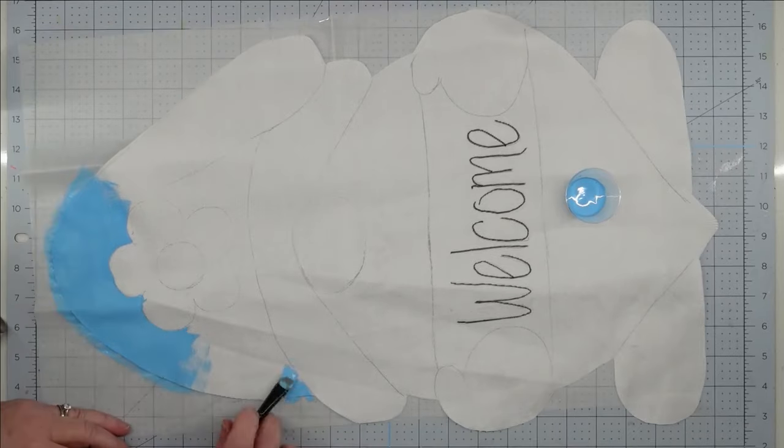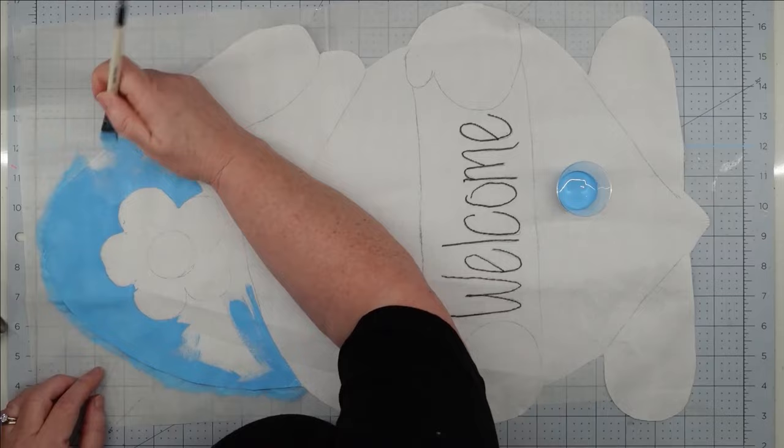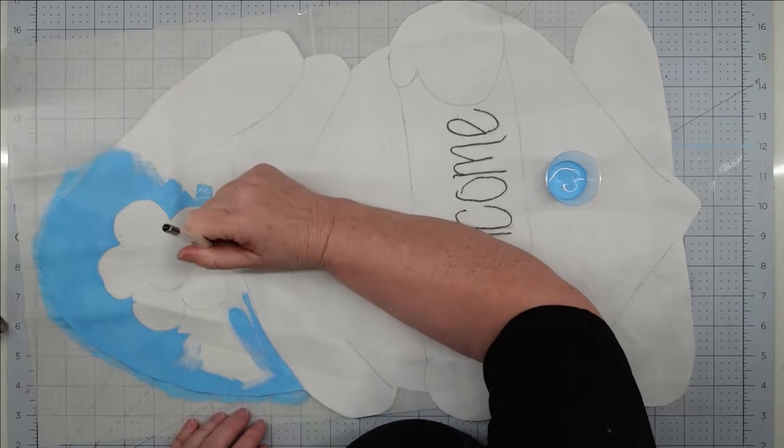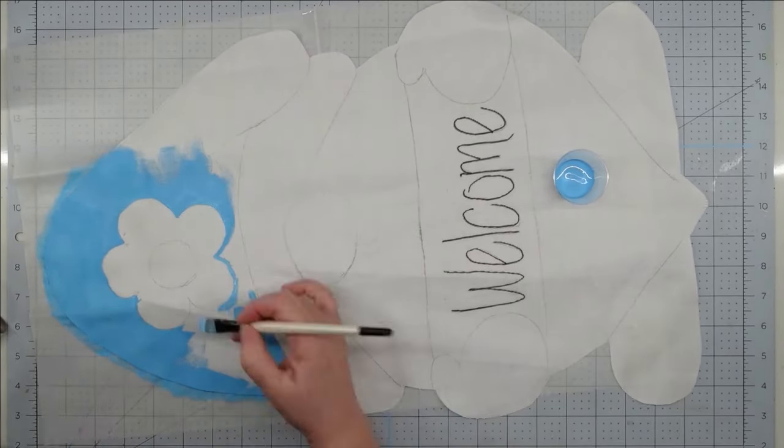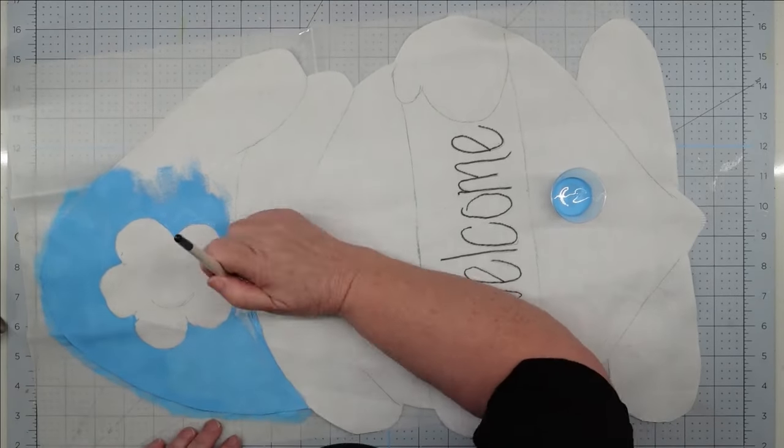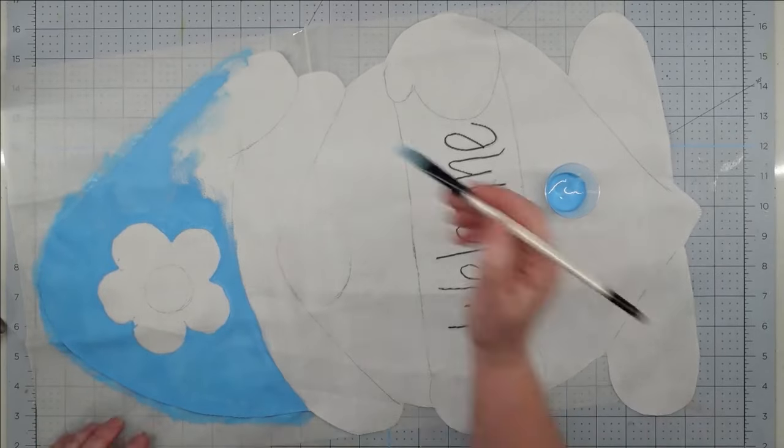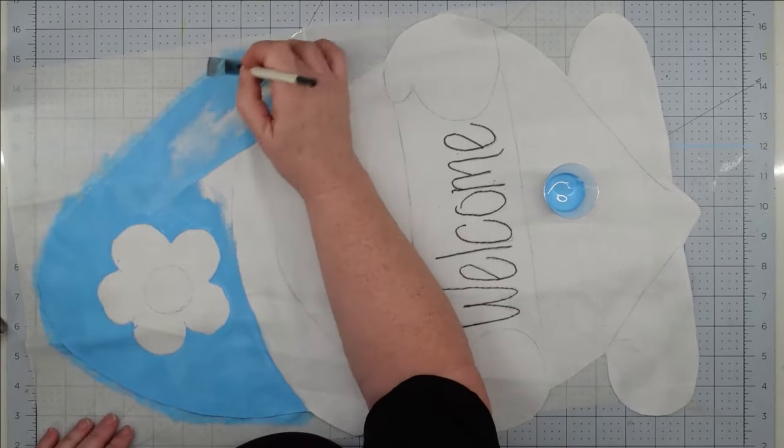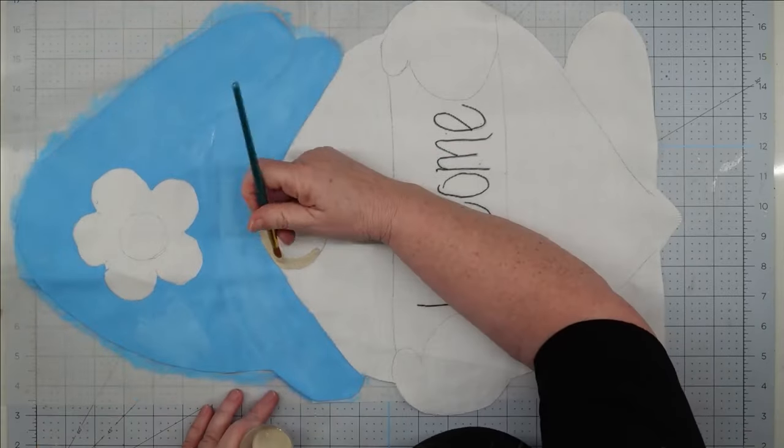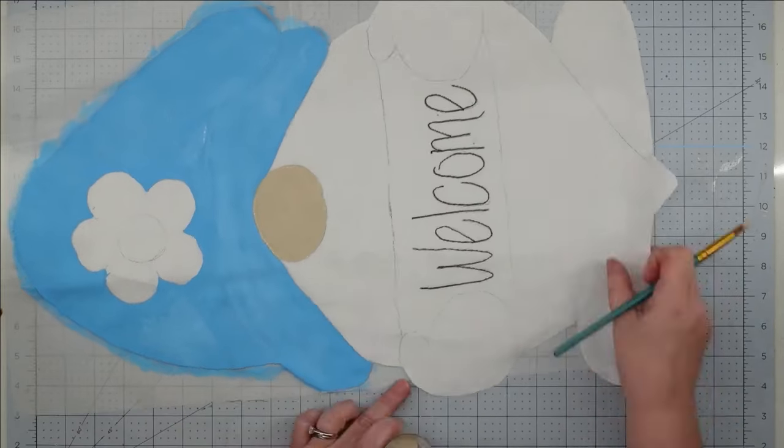Now that I have my lines transferred to my project, I decided to go over that welcome word with a black permanent pen. This is just going to help me be able to see it once I finish painting so that I have my dimensions for my word. Now we get to do the fun part and that's the painting. I love painting these. I think it is so therapeutic.